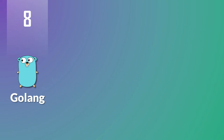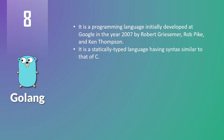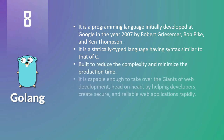At number eight we have Go. Go is a programming language initially developed at Google in the year 2007 by Robert Griesemer, Rob Pike, and Ken Thompson. It is a statically typed language with syntax similar to C. It is built to reduce complexity and minimize production time. Invented by Google, Go is capable enough to help developers create secure and reliable web applications rapidly.